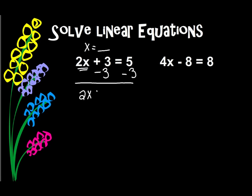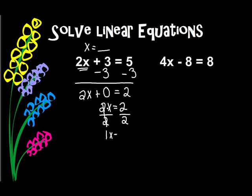When I add down, I have 2x plus 0 — because 3 minus 3 is 0 — equals 5 minus 3 is 2. Well, 2x plus 0 is simply 2x, so 2x equals 2. Now I still need to get x by itself. When I have a number and a letter next to each other, that means to multiply. The opposite of multiplying is dividing, and I divide by the number that's in front of the variable. So if I divide by 2 on the left side, I have to divide by 2 on the right side. 2 divided by 2 is 1, so I get 1x equals 1. Well, 1x is the same thing as just x, so I get x equals 1.